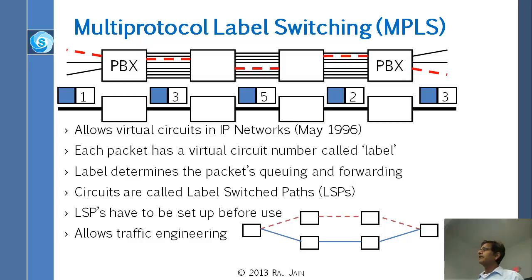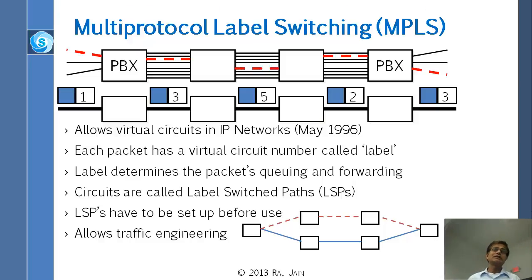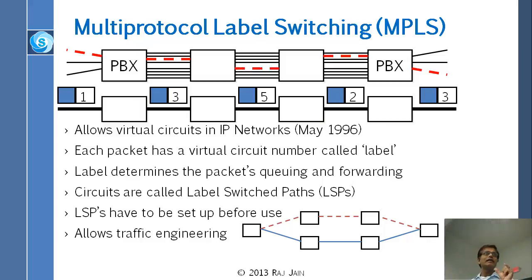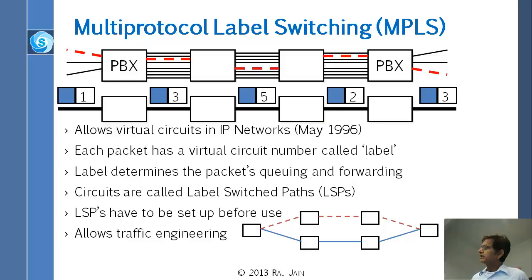This is called multi-protocol label switching because it doesn't matter what protocol you have after that label — it could be IP, IPv4, IPv6, whatever you want. The idea is that each packet will have a label in the front and that label is switched at every router. This allows virtual circuits in IP networks. Each packet has a virtual circuit number called a label. The label determines the packet's queuing and forwarding. The circuits are called label switched paths, or LSPs.